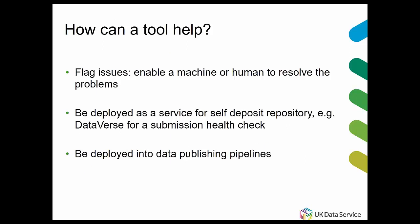So how can a tool help? First of all, we can flag the issues — run a report on the things we're looking for, and it flags up where the errors are. It doesn't necessarily solve them all or clean them; it's telling you where the errors are, which is very useful. We want to deploy it as a service for our self-deposit repository so people can do a health check on their data before they submit it. Researchers often don't know what data quality means until they get a check back from a repository. This tool can also be deployed into data publishing pipelines, so if you're streaming data in or bringing the same data in every night, you can run these checks for known things.